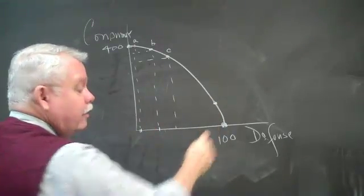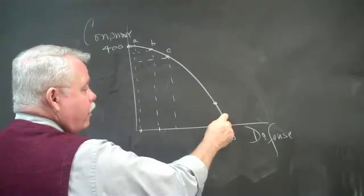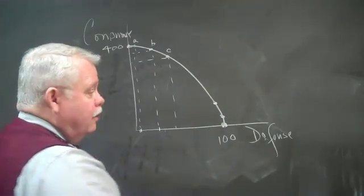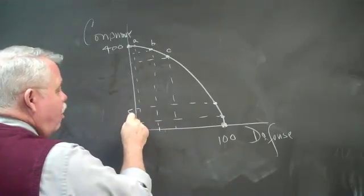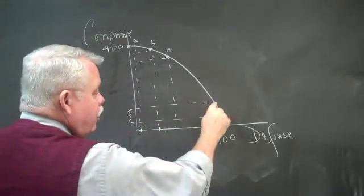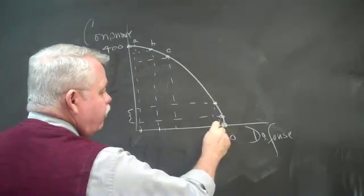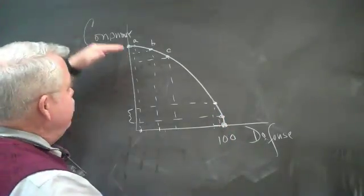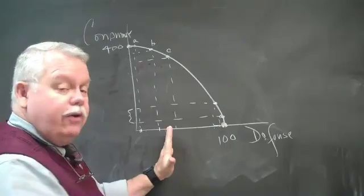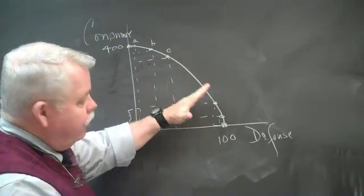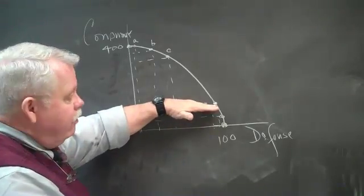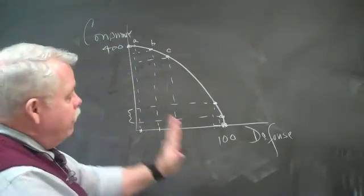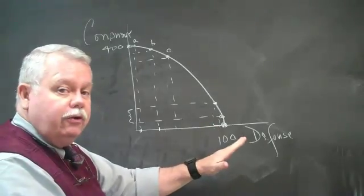you're going to have to give up a fairly large amount of consumer goods to get a fairly small increase in defense goods. Originally, you give up a little consumer and more defense. But as you get further down in here, the substitution isn't as smooth, and so you have to give up progressively more units of consumer goods for each additional unit of defense goods.